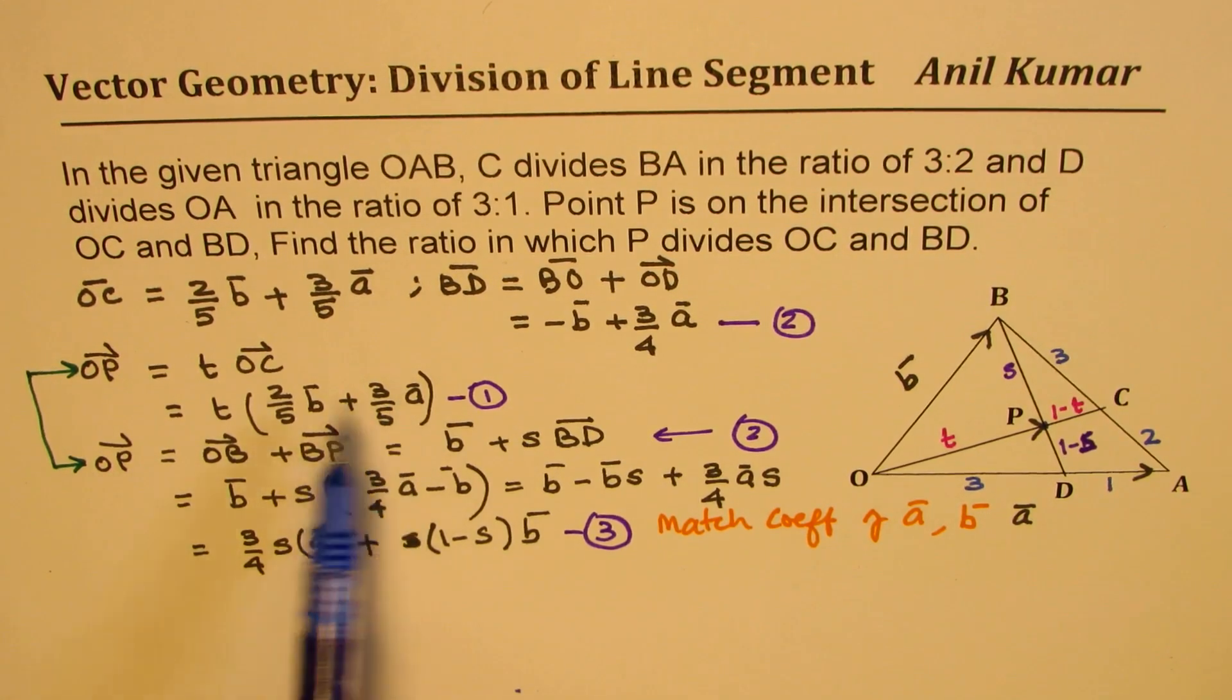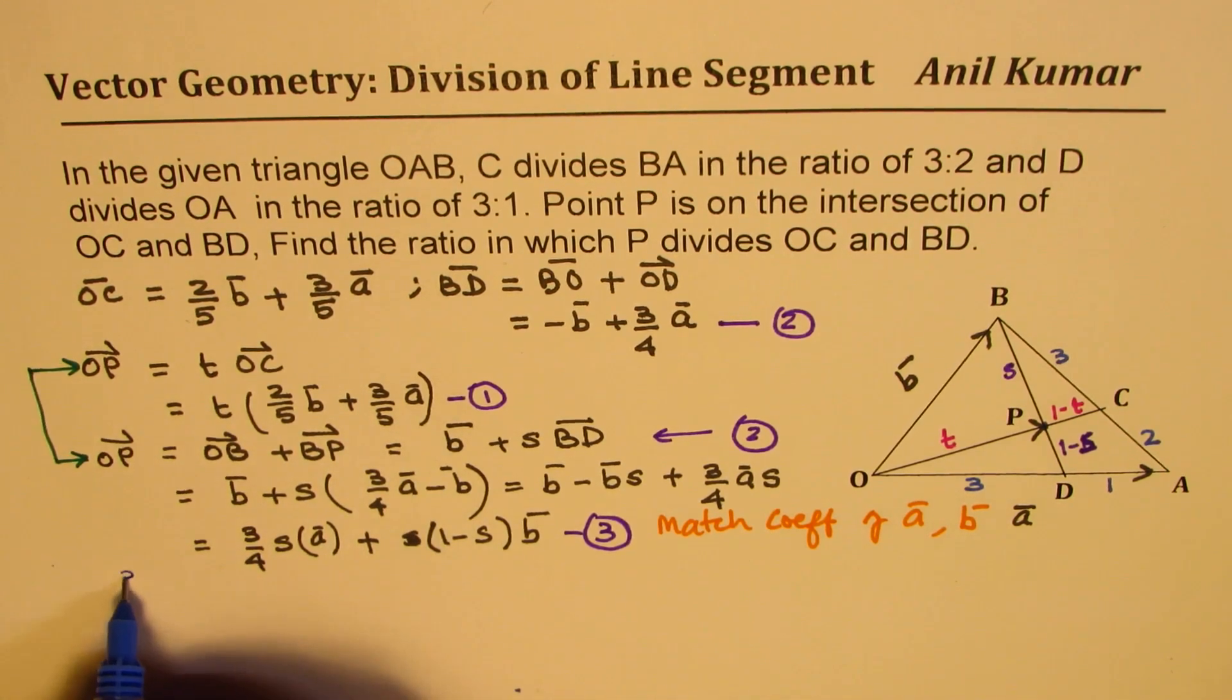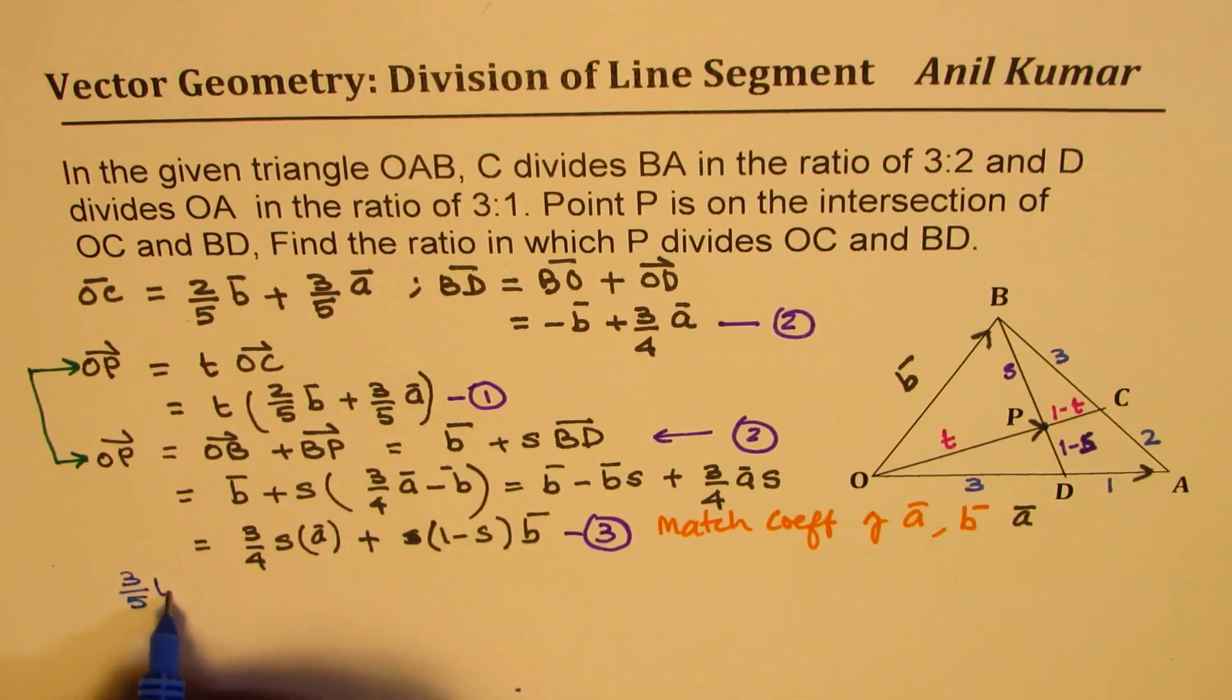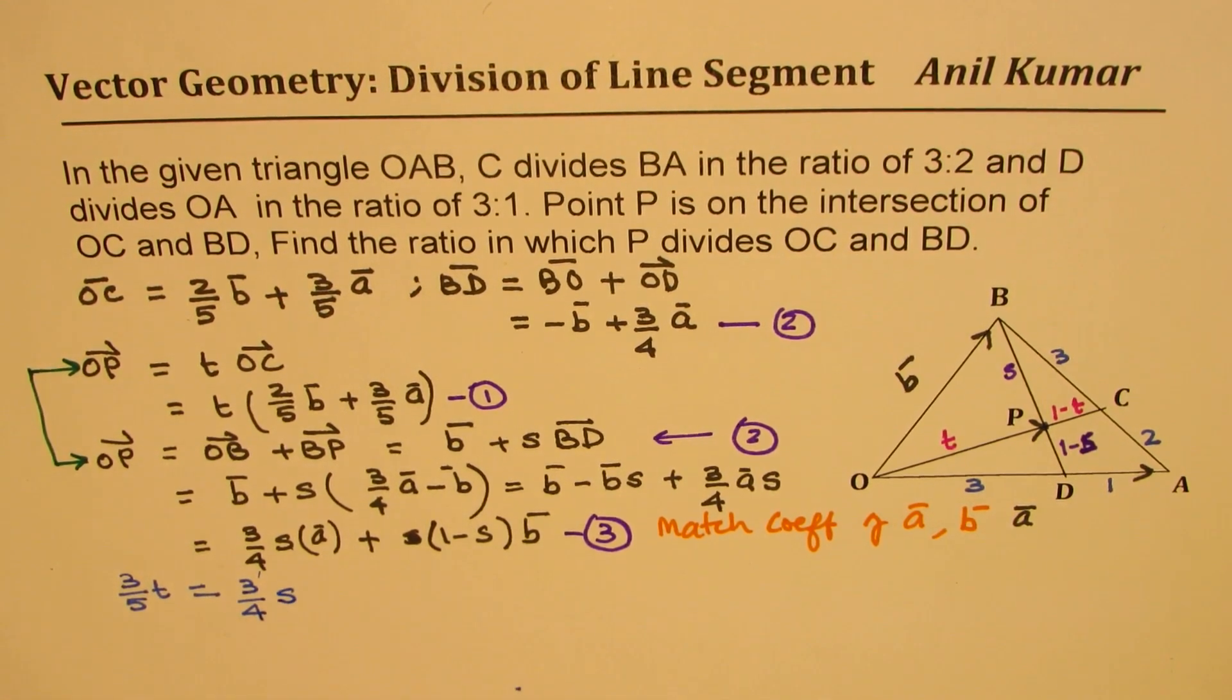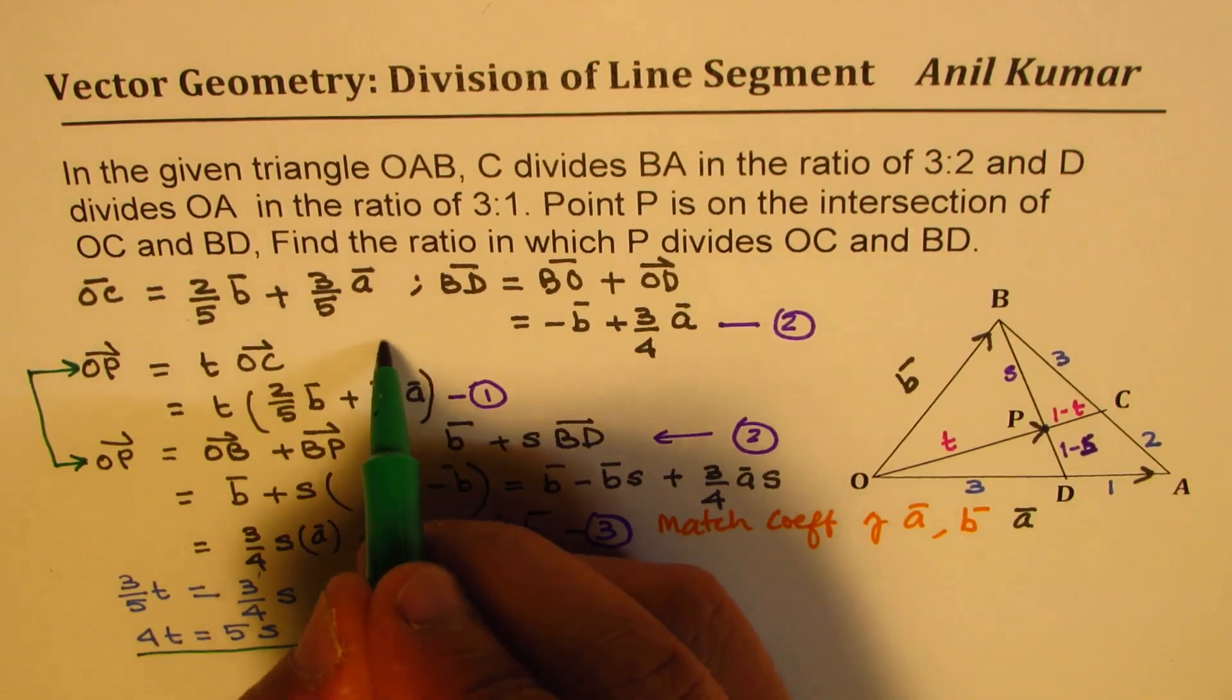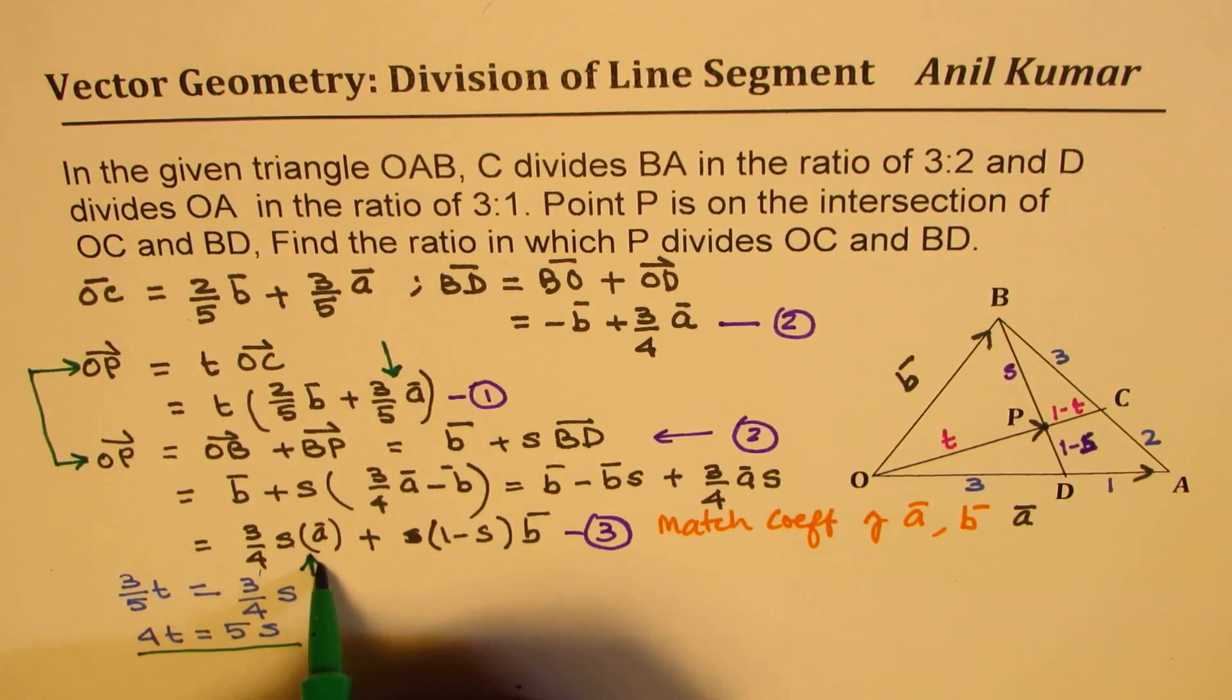So what is the coefficient of A in the first equation? 3/5 T, right? So we will write (3/5)T from here equals from here, coefficient of A is (3/4)S. (3/4)S. So that gives us 4T equals 5S. So we get one equation. 4T equals 5S. This is by comparing the coefficients of A. This is what we did.